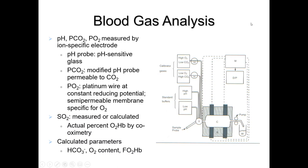For blood gas analysis, pH, pCO2, and pO2 can be measured by ion-specific electrodes. The pH probe uses pH-sensitive glass; the pCO2 electrode is a modified pH probe permeable to CO2; and the pO2 electrode uses a platinum wire at constant reducing potential with a semi-permeable membrane specific for oxygen. Oxygen saturation is measured or calculated as the actual percent of oxyhemoglobin by co-oximetry. Calculated parameters include bicarbonate, oxygen content, and fO2Hb.